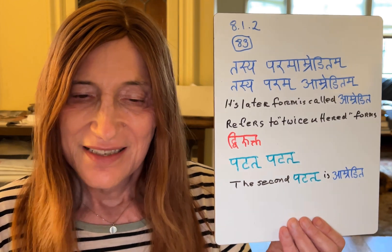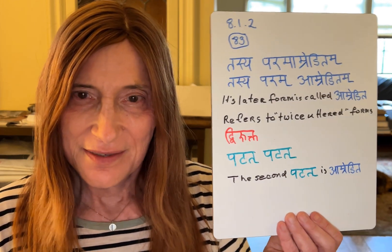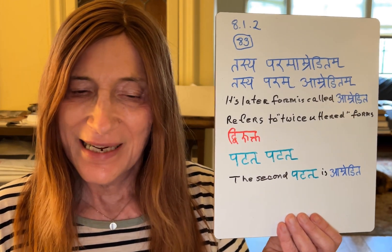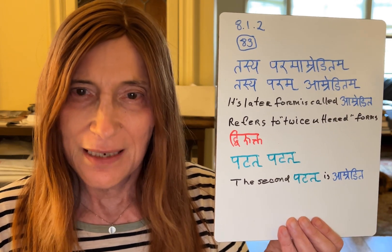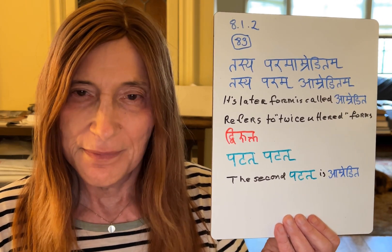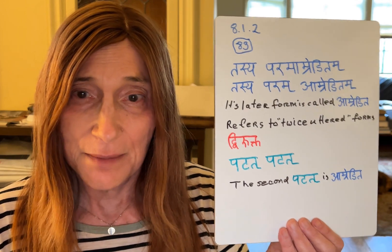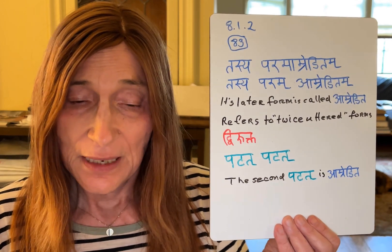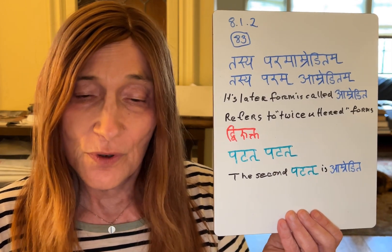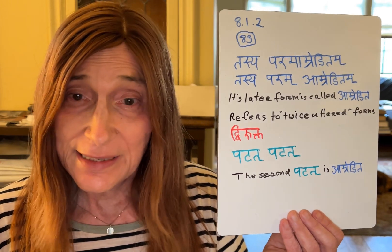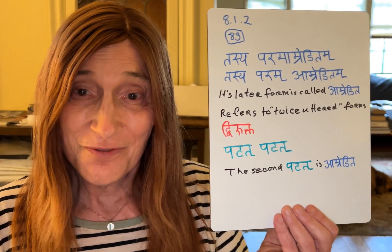The sutra is 'tasya paramam amredita' — 'tasya paramam amredita.' This sanya sutra gives the name 'amredita.' Its later form is called amredita.